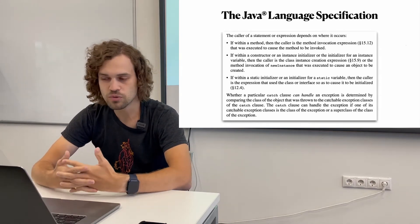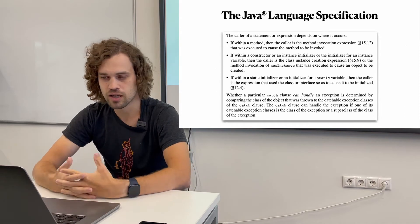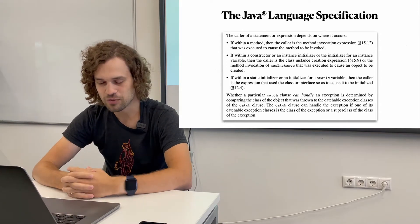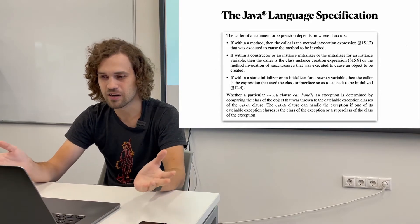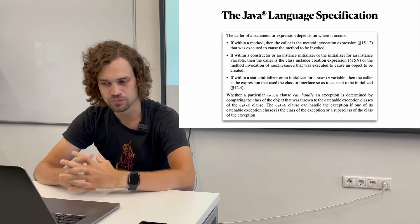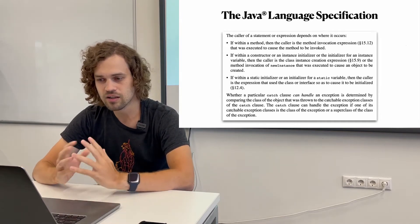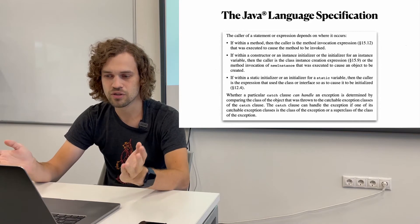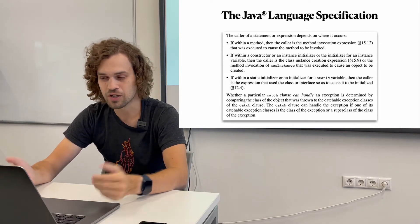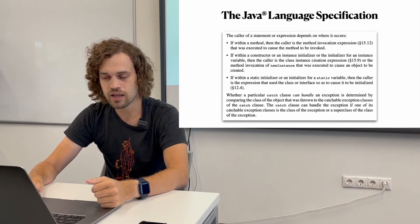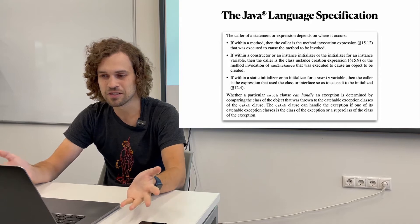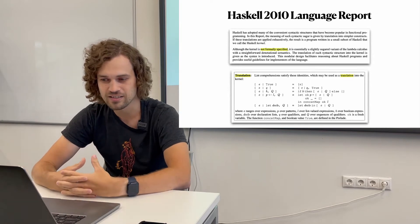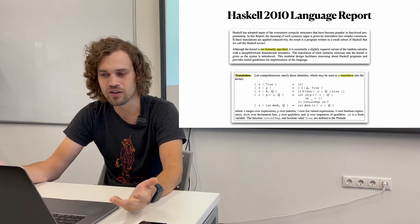So what about semantics? If you look at the language specification for any programming language you like, you can find lots and lots of text. For example, if you look at the Java language specification, you can find a lot of text describing how a method should be called or how exceptions should be handled. A lot of the meaning assigned to Java programs is explained simply using English words.